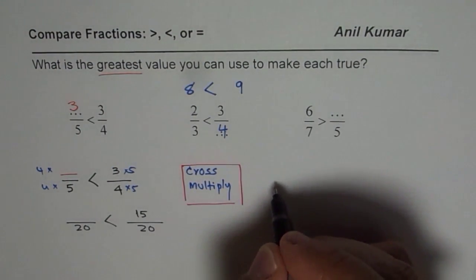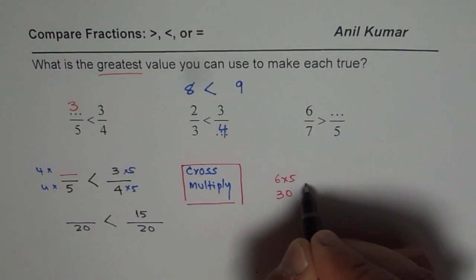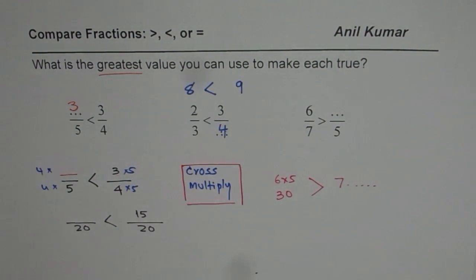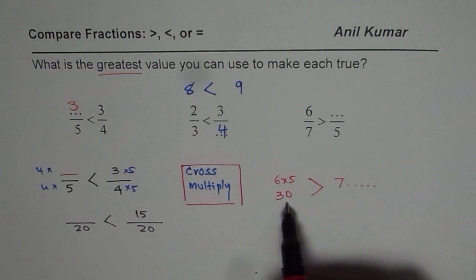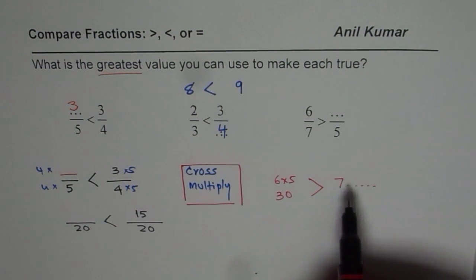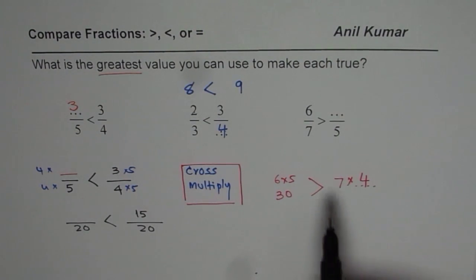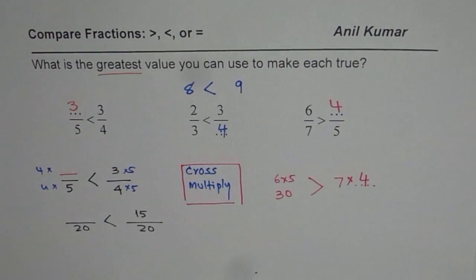So if I cross multiply, I get 6 times 5, which is 30. 30 should be greater than 7 times something. So 7 times what is less than 30? 7 times 4. You get the idea? Because 7 times 5 is 35. And therefore, this number should be 4. So that is how we can actually solve such questions very easily.